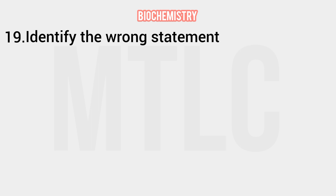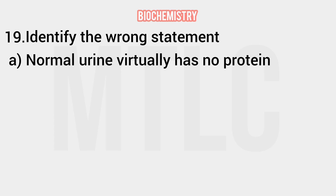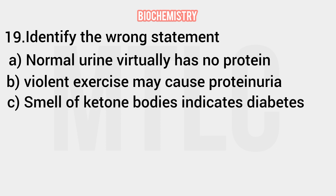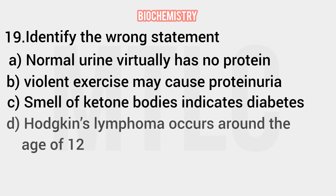Identify the wrong statement. One statement is wrong. Normal urine virtually has no protein. Violent exercise may cause proteinuria. The smell of ketone bodies indicates diabetes. Hodgkin's lymphoma occurs around the age of 12 — this is the wrong statement. Hodgkin's lymphoma actually occurs around the age of 32.